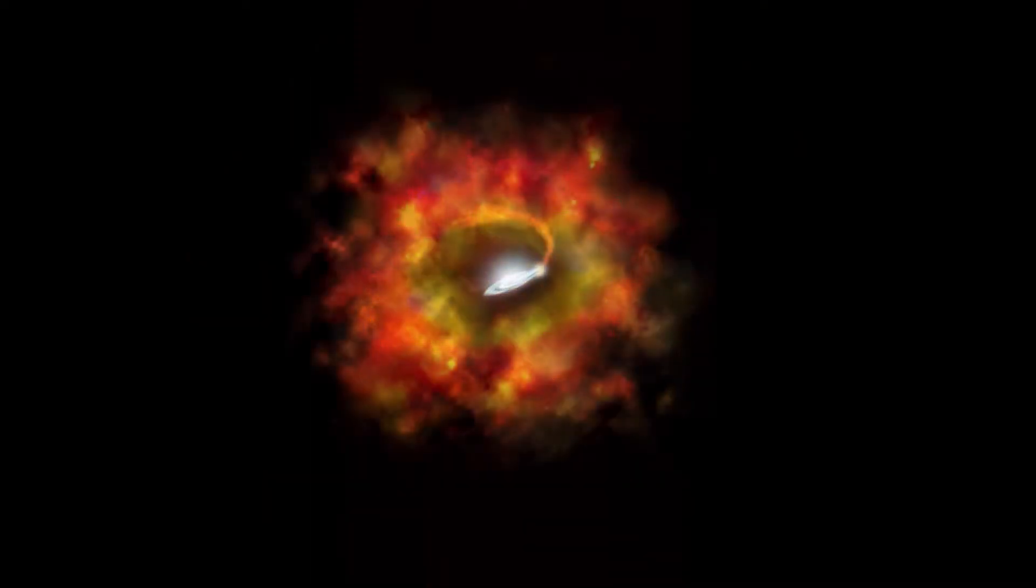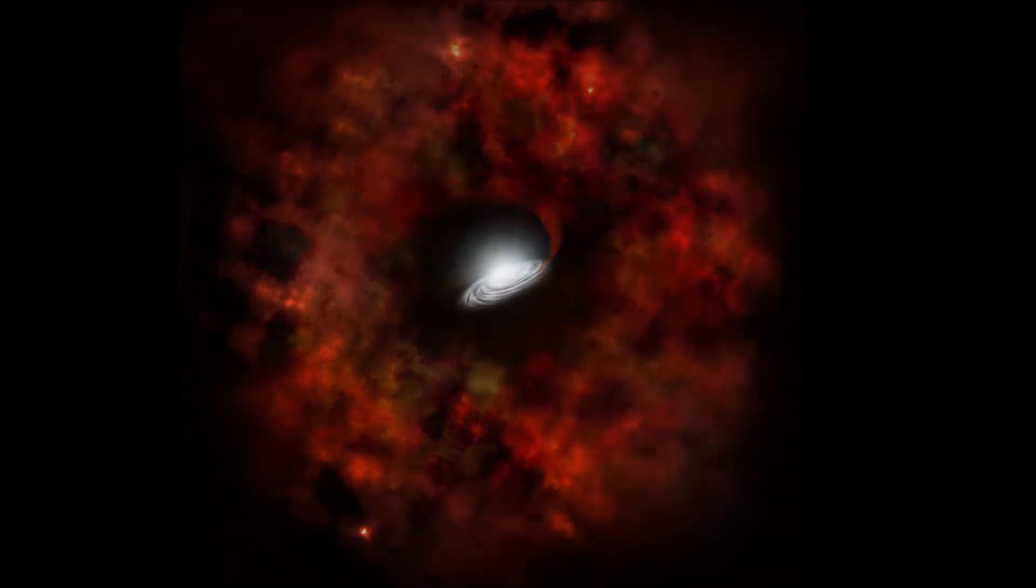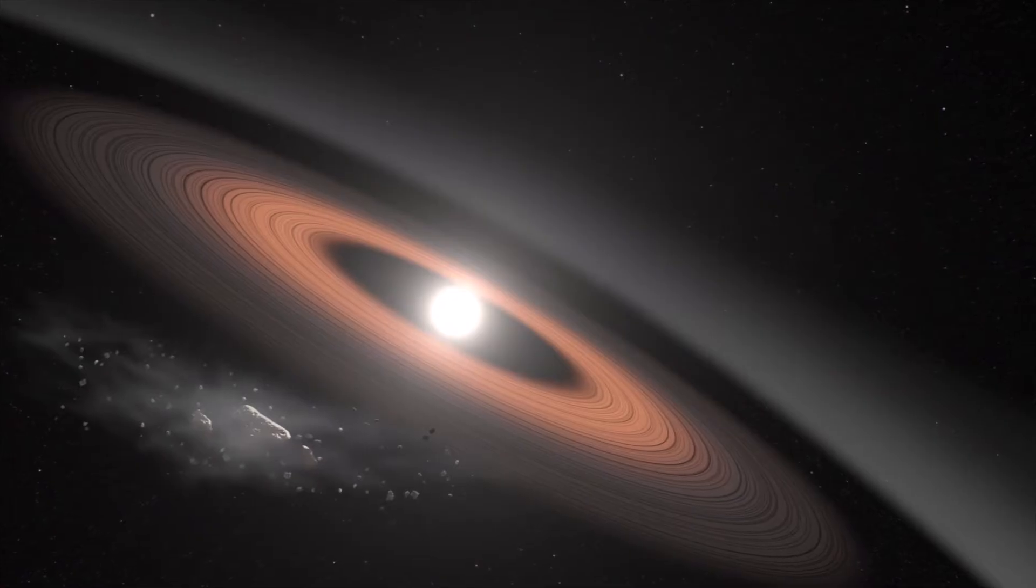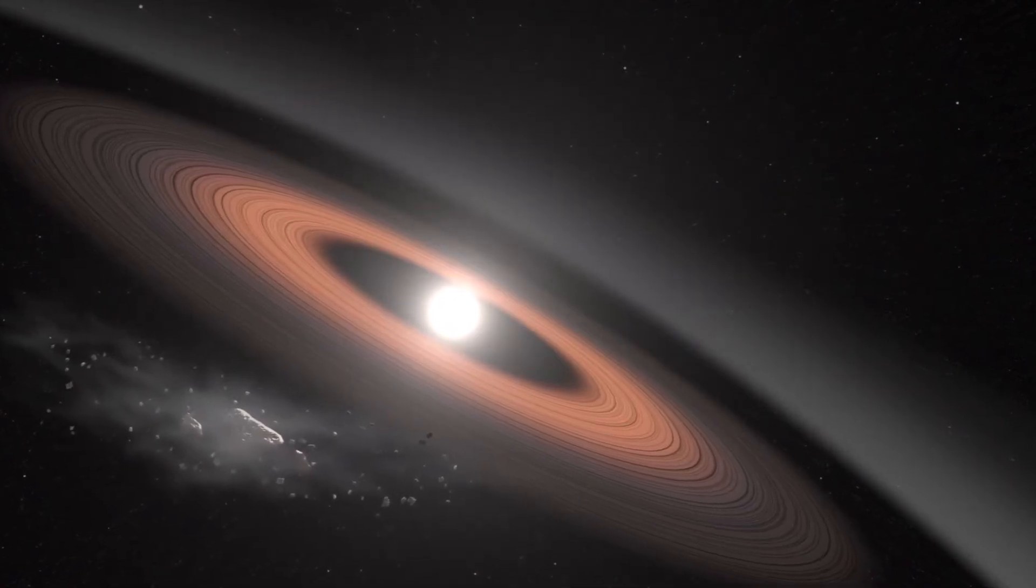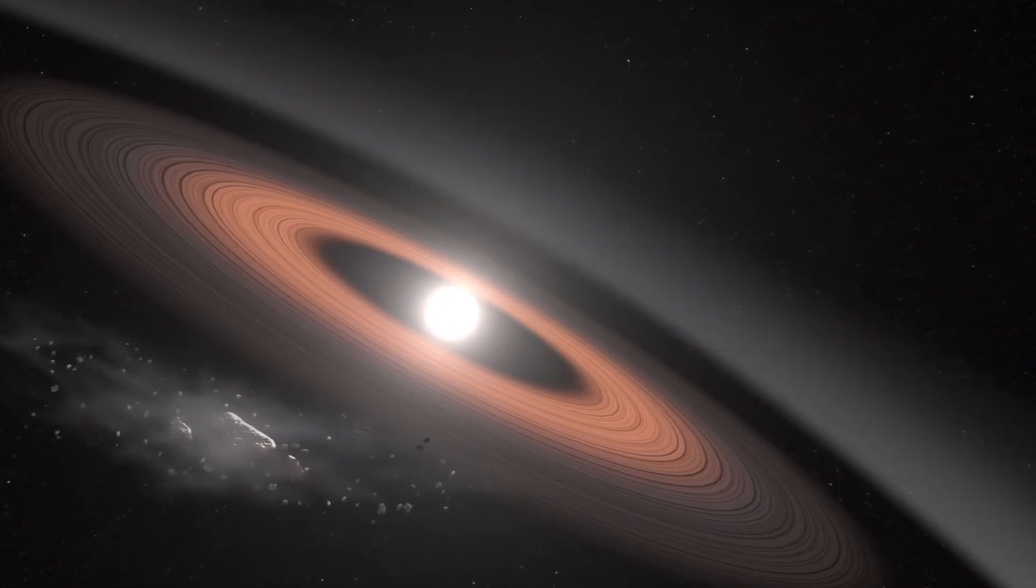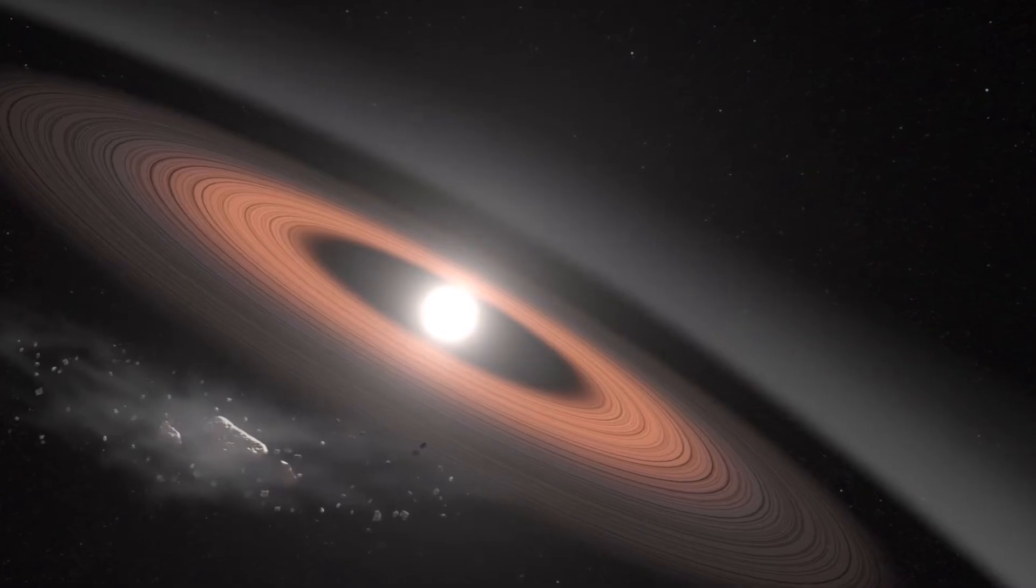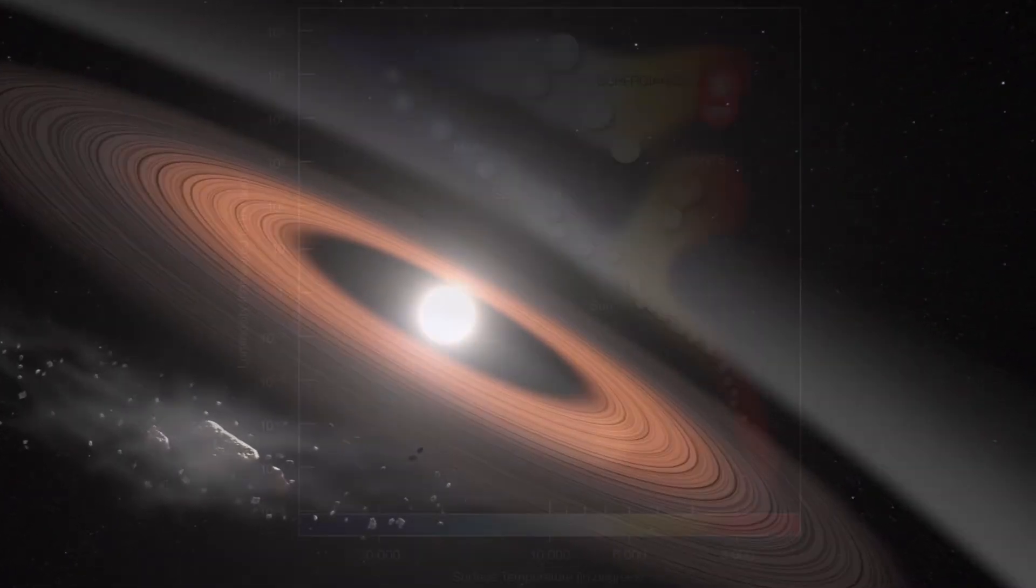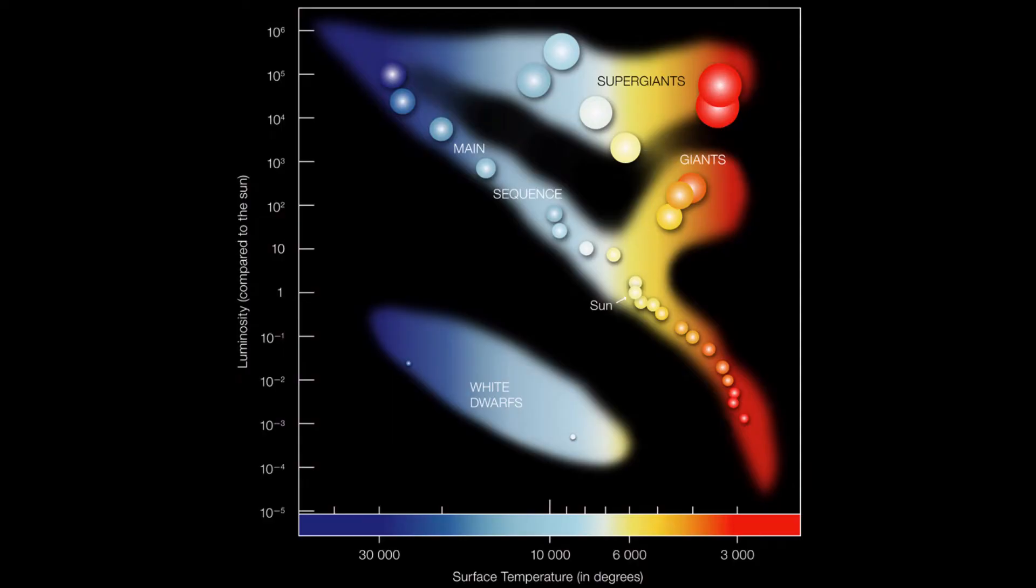Smaller stars, like our Sun, will expel their outer layers and leave a dense, dim, slowly cooling core called a white dwarf, visible in the lower left of the HR diagram. White dwarfs are extremely hot when originally formed, but as they have no means of producing additional energy, they will cool and darken over time, eventually becoming a black dwarf, a dense lump made mostly of carbon that emits neither heat nor light.